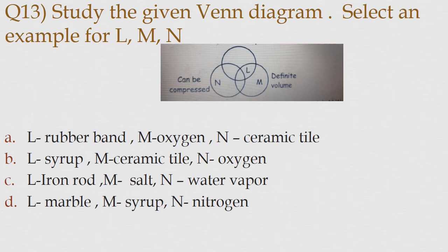Option B: L: Syrup, M: Ceramic tile, N: Oxygen. Option C: L: Iron rod, M: Salt, N: Water paper.